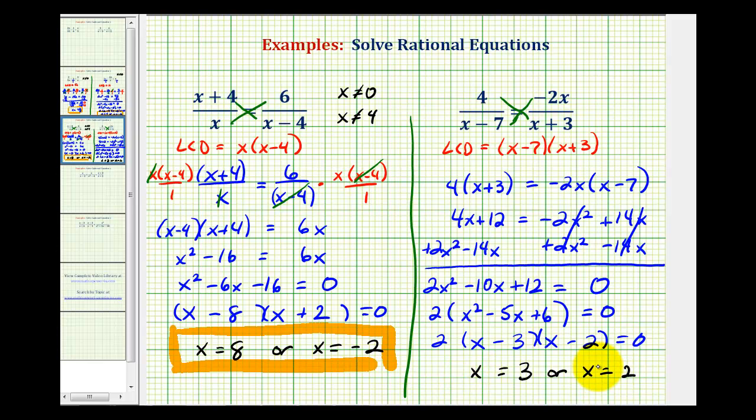But let's go back and make sure these don't make the denominators equal to zero. Back at the original equation, we know if x was seven, we'd have a denominator of zero in this first fraction.